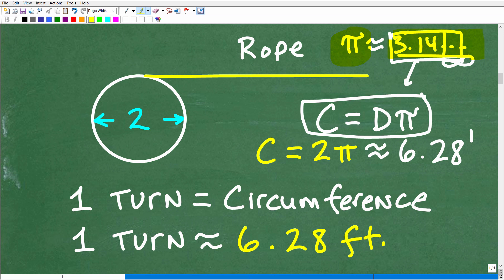But anyways, I don't want to skip ahead. Let's go ahead and calculate the circumference. So the circumference is going to be equal to the diameter, which is 2 feet, times pi. This is the exact measurement. But let's go ahead and replace that pi with 3.14. So that's going to be approximately 6.28 feet. Okay? Because our diameter is in feet. Our circumference is in feet.